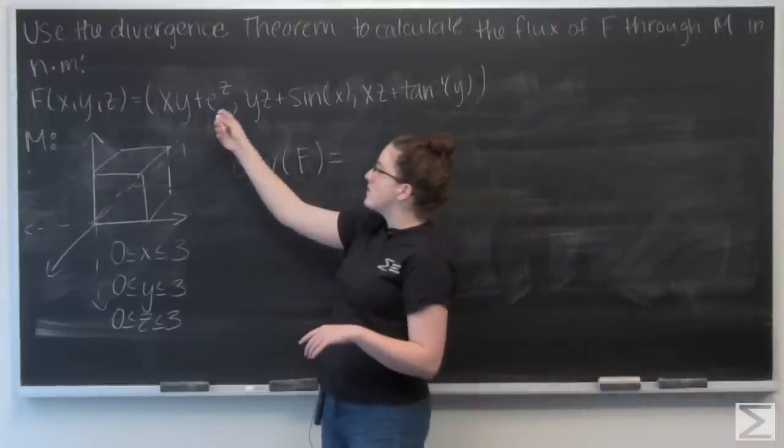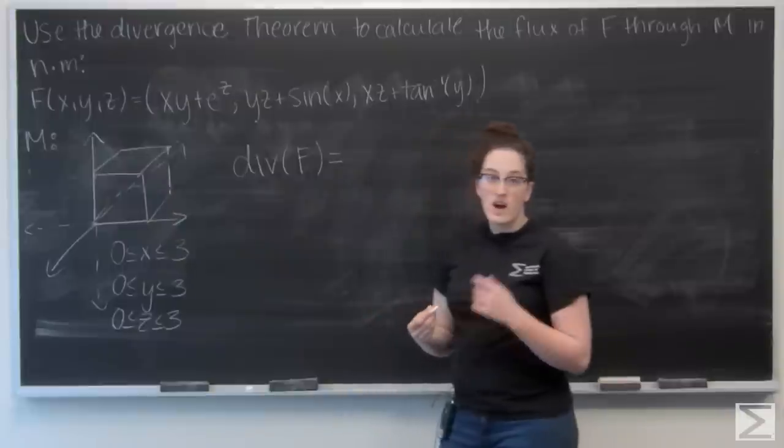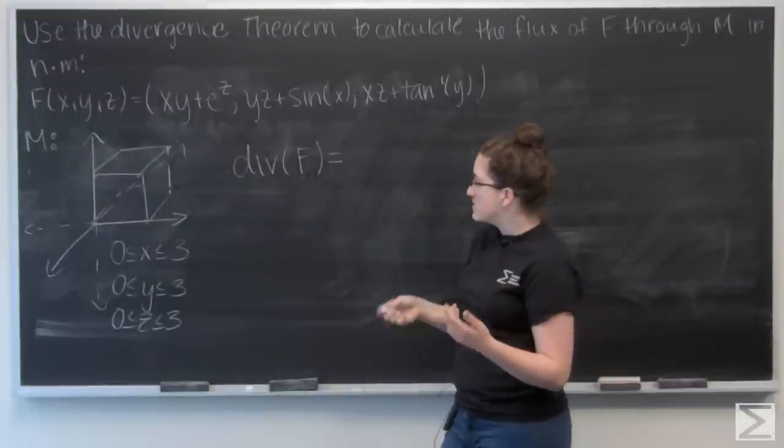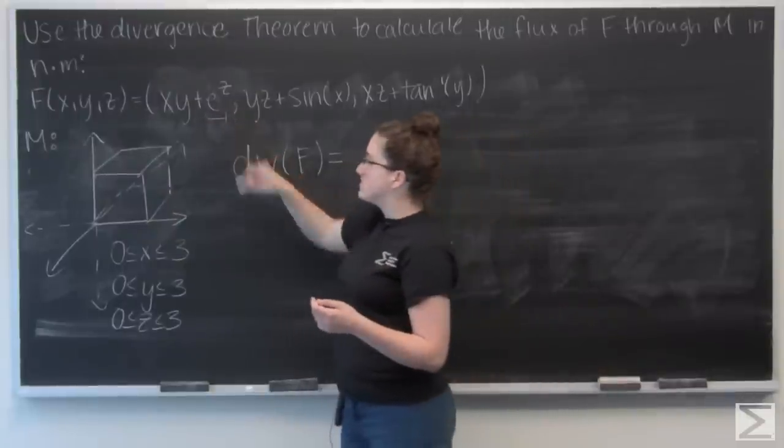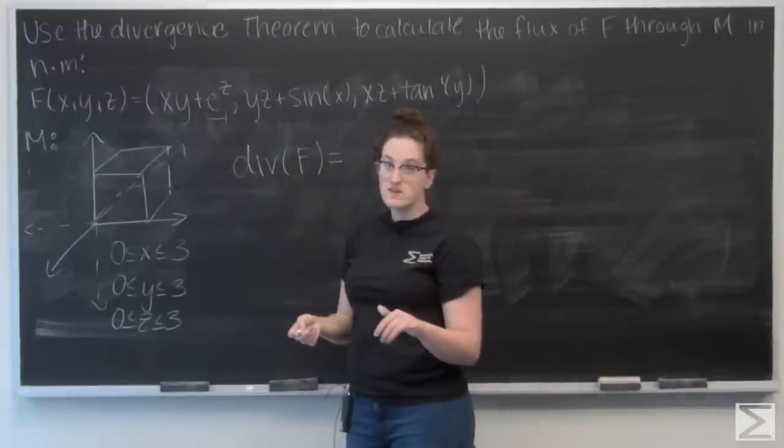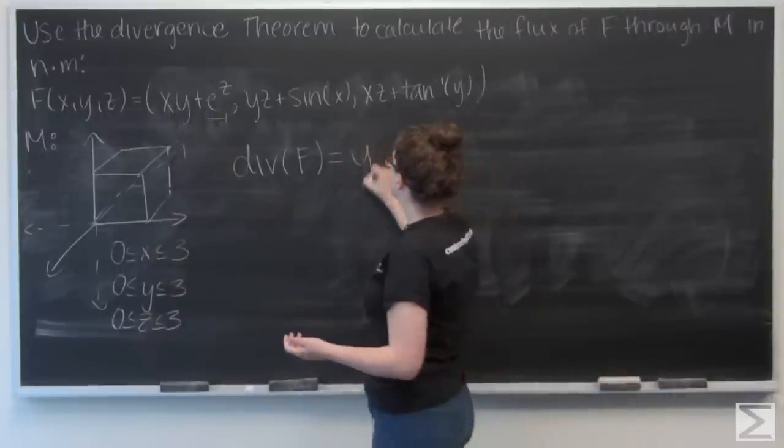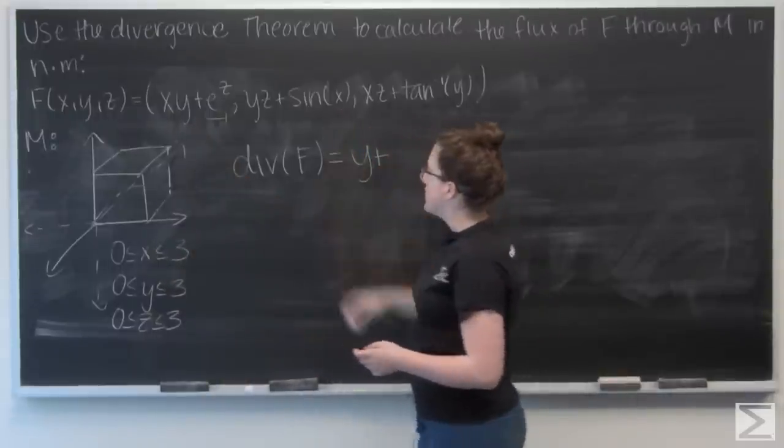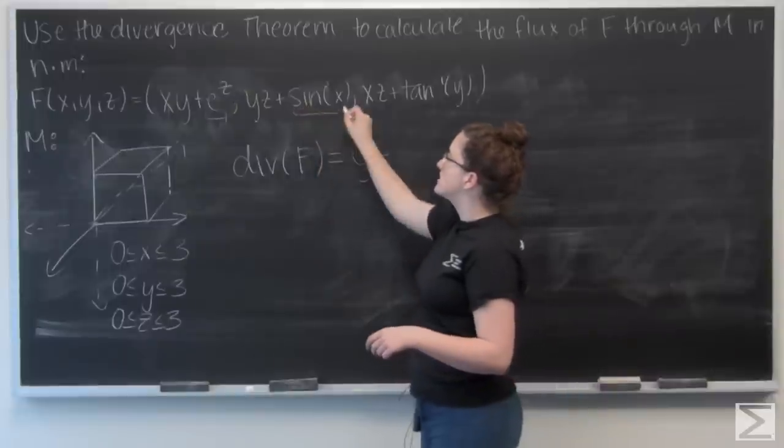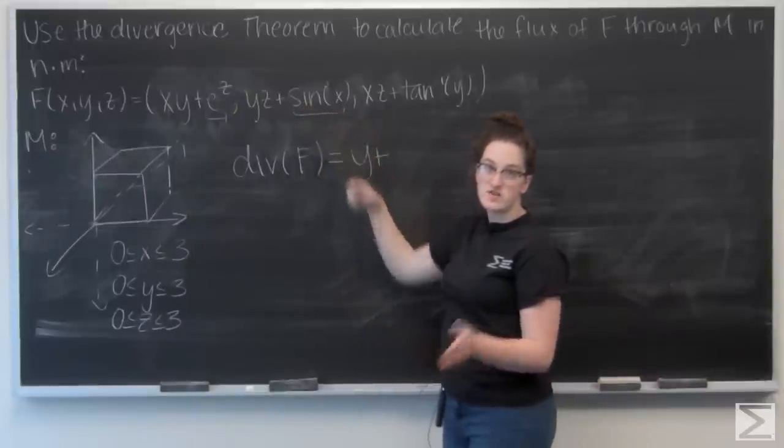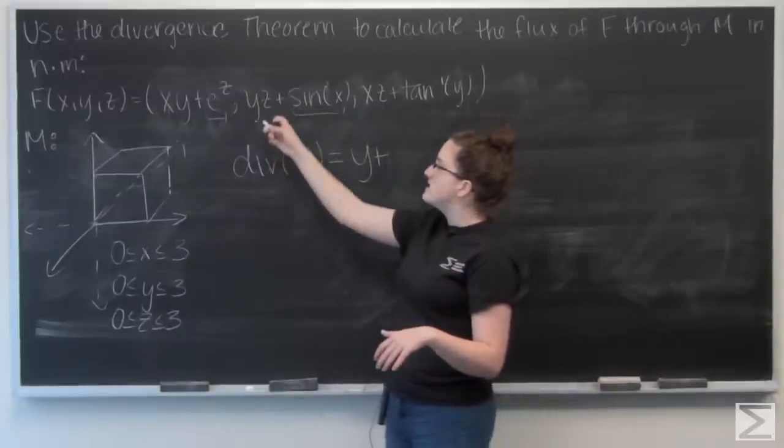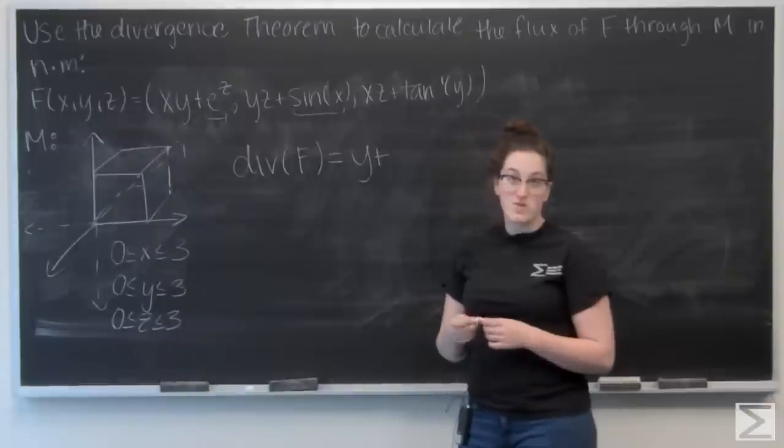Okay, so x plus y plus e to the z, its derivative with respect to x is just going to be y. E to the z gets treated like a constant, so its derivative is 0, and then x times y differentiates to y. Now let's look at the j component. So this time sine of x is going to be treated like a constant, so that drops out. And then the derivative of yz with respect to y is just z.